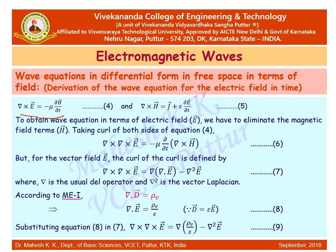Taking curl on both sides of equation 4 (del cross E = −μ ∂H/∂t) to eliminate the magnetic field, we get curl of curl of E = −μ ∂/∂t (del cross H). The curl of curl of a vector field E is defined as del(del·E) − del²E.